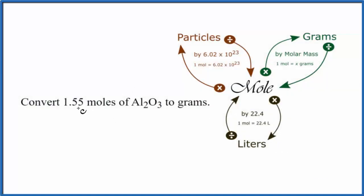In this video, we'll convert from moles of Al2O3 to grams. So we start out with 1.55 moles of Al2O3, and we want to get that to grams.